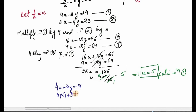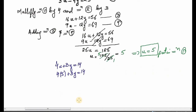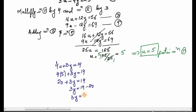Continuing: 3y = 14 - 20, so 3y = -6, and therefore y = -6 divided by 3, which equals -2. So the value of y is -2.